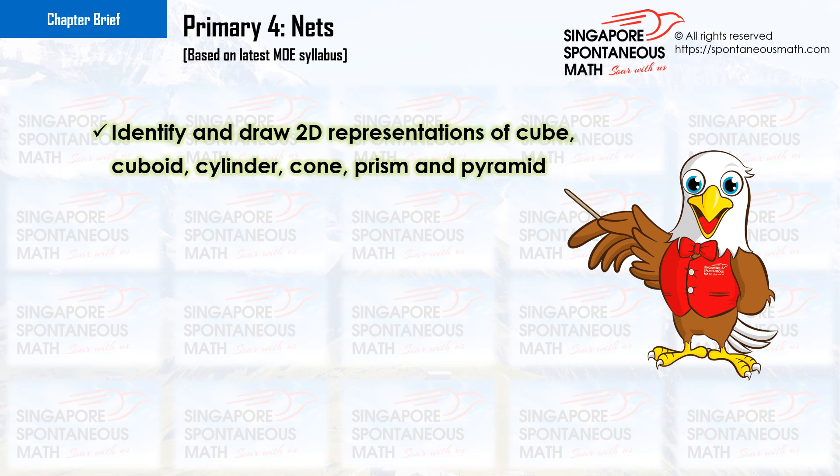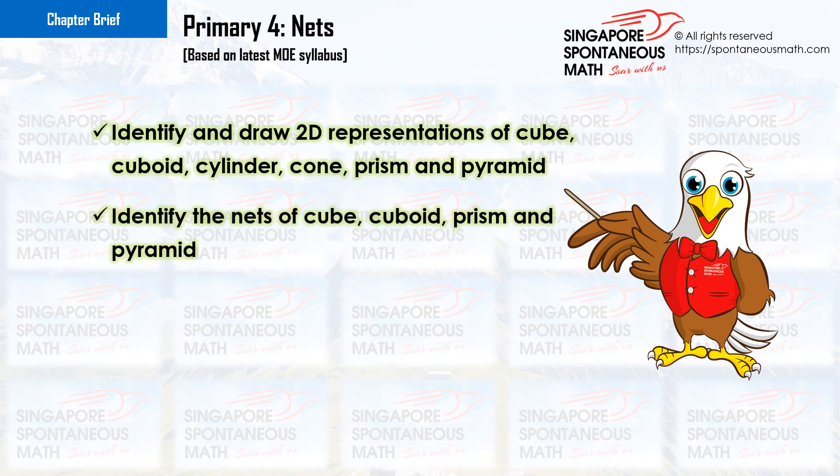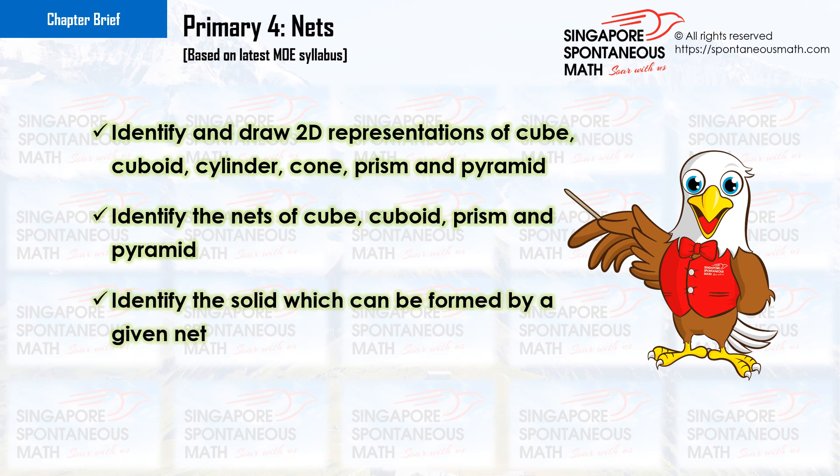Identify and draw 2D representations of cube, cuboid, cylinder, cone, prism and pyramid. Identify the nets of cube, cuboid, prism and pyramid. Identify the solid which can be formed by a given net.